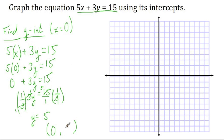x equals 0, y equals 5. And I can now plot this point. And it should be at my y-intercept. Here we go. The point 0, 5. 0 on the x, 5 on the y. I should be right there.